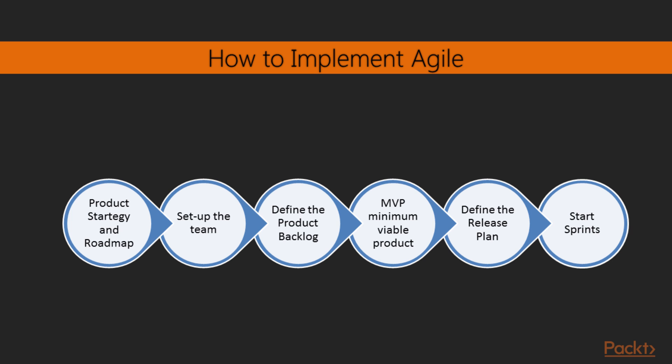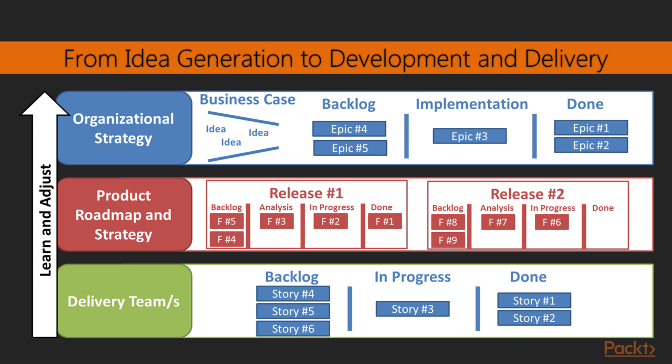Now that things are digested, we will refine the view on how to manage the process from ideation to development and delivery at large organization scale. In line with the approach taken by SAFe — the Scaled Agile Framework — we structure the process on three levels: organizational strategy (SAFe names this the portfolio level), product and roadmap strategy (SAFe calls this the program level), and delivery team (SAFe names this the team level).